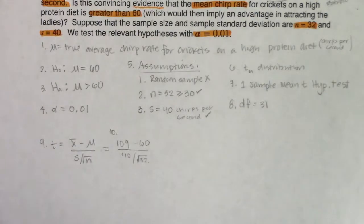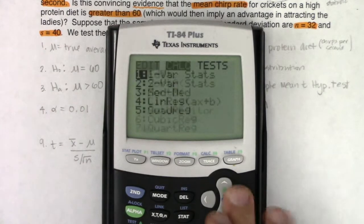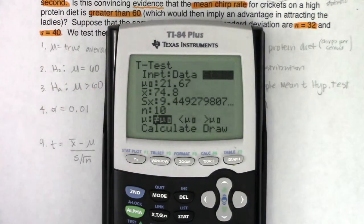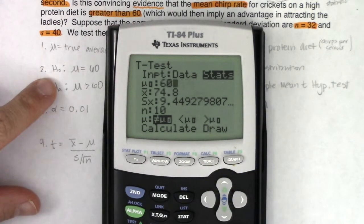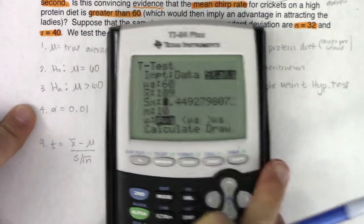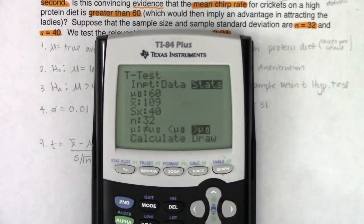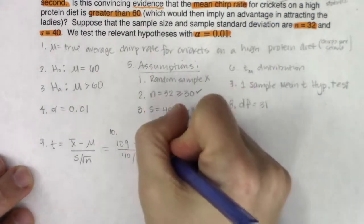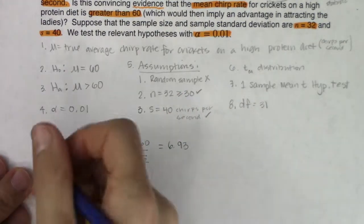I turn my calculator on, go to STAT, TESTS, T-Test — I'm doing a one-sample mean t-test, not a z-test. I had summary statistics: null was 60, sample mean was 109, sample standard deviation was 40, sample size was 32 crickets, with a greater-than alternate. Hit Calculate. The test statistic comes out to 6.93. The calculator output screen will also help me with step 11.